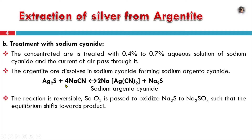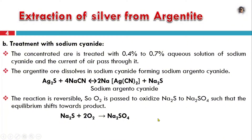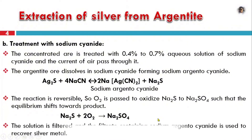This complex can be used to prevent oxygen interference. Na2S is produced as a byproduct. The equilibrium can be maintained by removing Na2S from the product side, which shifts the equilibrium forward. We need to keep oxygen passing through and remove the Na2S to drive the reaction forward.